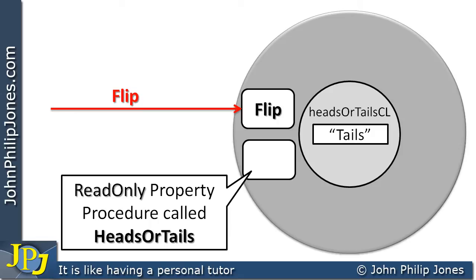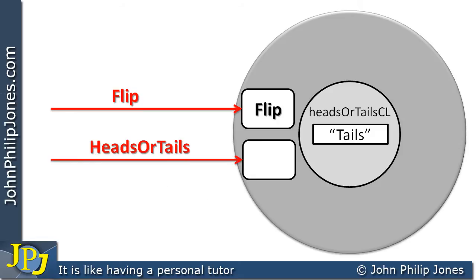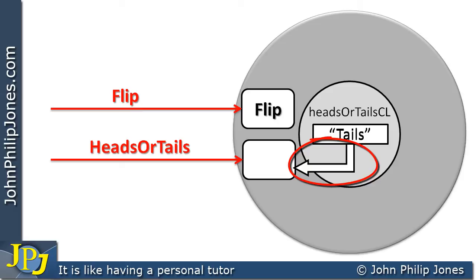So for example, if we now see headsOrTails called, this is able to see the "tails" in the center of the object. In other words, a path can be made from the center to this particular property procedure, and that path is in one direction because this is a read-only property procedure.